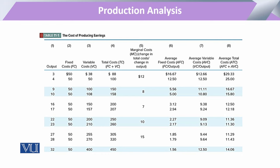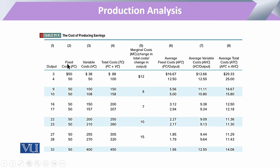Now coming to the shape of the cost curve, we are going to see this table that we have already utilized, where we have plotted output in the first column, then fixed cost, variable cost, total cost, marginal cost, and other things. Now, how we plot them in a curve — all these costs are particularly related to units of output. We will keep the units of output on the x-axis and the total cost on the vertical axis, then join all these points.